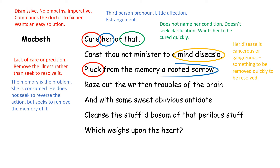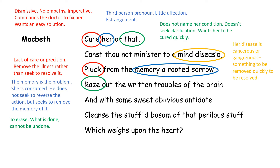He then asks the doctor to 'pluck from the memory a rooted sorrow.' If you think of that imperative verb 'pluck,' it shows a lack of care or precision — he simply wants her memories ripped out of her head so she can be fixed and normal again. He's focusing more on how he can remove the illness rather than how the issues can be resolved. Lady Macbeth's memory has rooted pain in it, coming from the murder of Duncan. Macbeth wants the doctor to reach inside her mind metaphorically, rip out the infected part so she can be normal again. He doesn't seek to reverse the actions, but to remove the memory of them — he doesn't wish he hadn't killed Duncan; he wishes Lady Macbeth didn't know about it. He then says 'raze out the written troubles of the brain' — the imperative verb 'raze' meaning to erase, to remove.